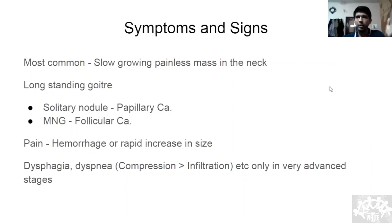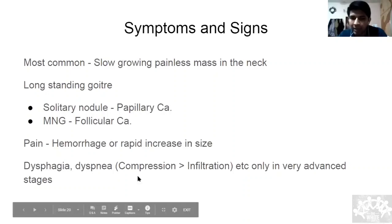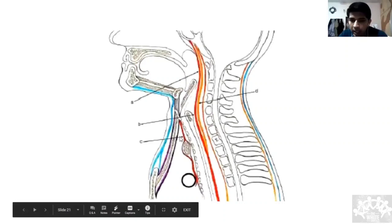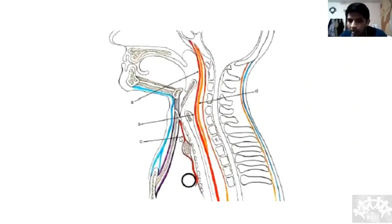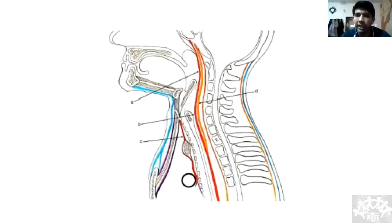Apart from the thyroid lump, patients can present with neck lymph node swelling. Compression symptoms like dysphagia and dyspnea are invariably due to compression, not infiltration, because the deep fascia is very tough. For it to infiltrate through to the esophagus, the tumor would have to pierce the deep fascia posteriorly, pierce the trachea, and grow into the esophagus — so if a patient had dysphagia from infiltration, their respiration would have stopped before that.